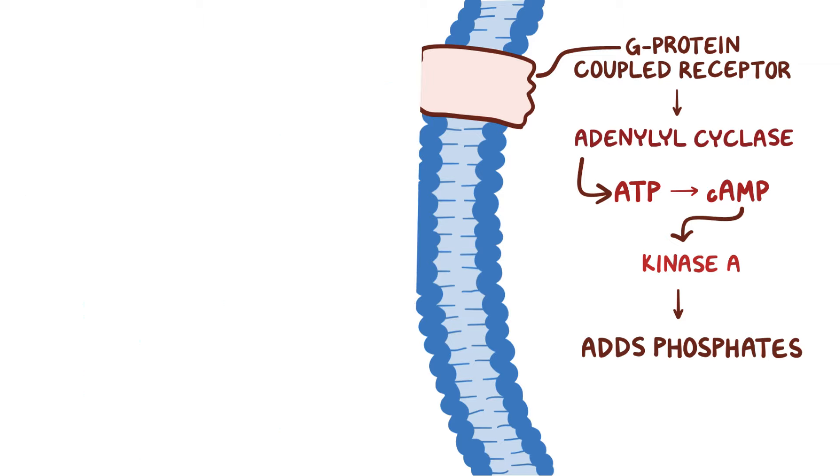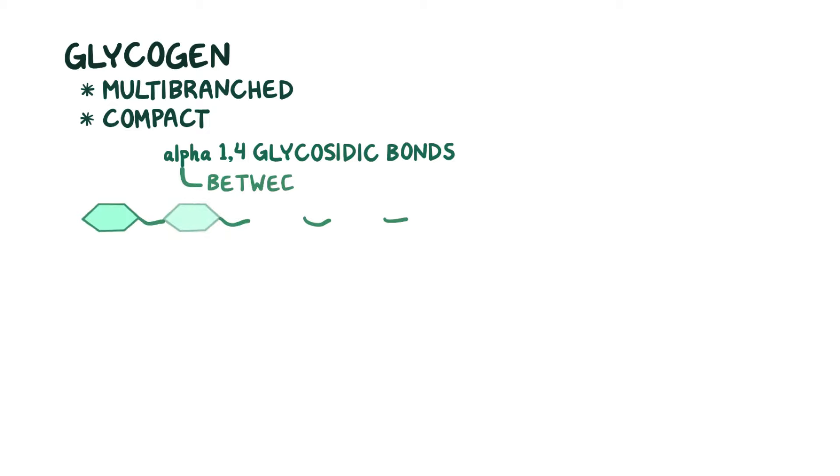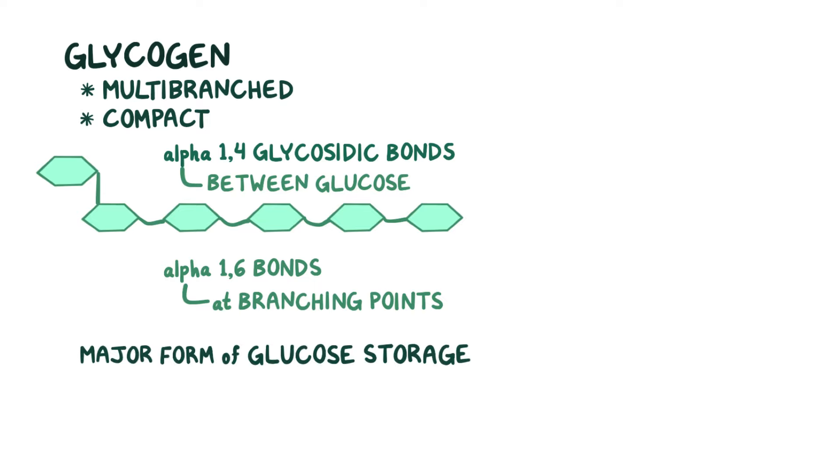Alright, as a quick recap. Glycogen is a multi-branched, compact structure that's made of alpha-1,4 glycosidic bonds between the glucose molecules, and alpha-1,6 bonds at the branching points. Glycogen is considered the major form of glucose storage in the body, and is primarily stored in the liver cells and skeletal muscle cells.